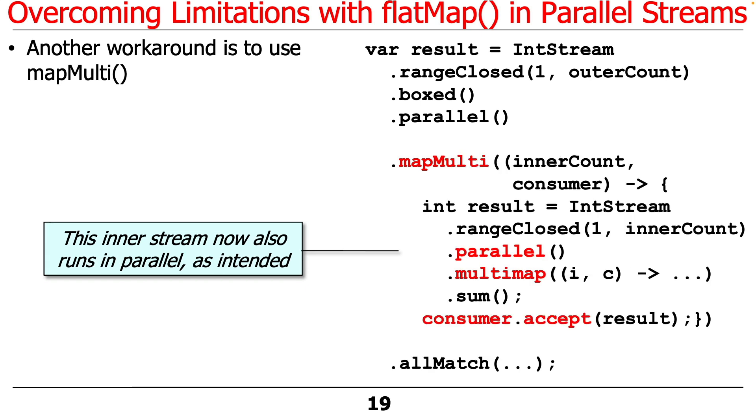There's yet another way to do this, which uses our good new friend mapMulti. Once again, we have the same outer stream as we saw before with rangeClosed in parallel. So we have a bunch of things that are running in parallel. And now we use mapMulti.